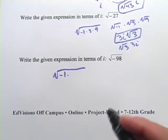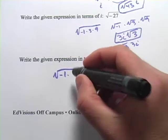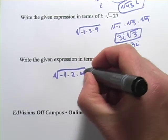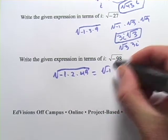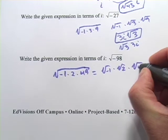98. Oh, that's 49 times 2. That's convenient. So, this is times 2 times 49. So, we've got this factored now. That equals square root of negative 1 times the square root of 2 times the square root of 49.